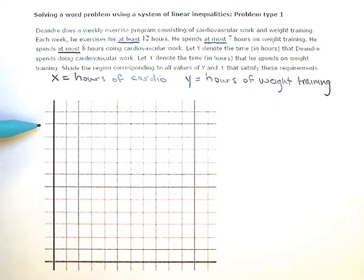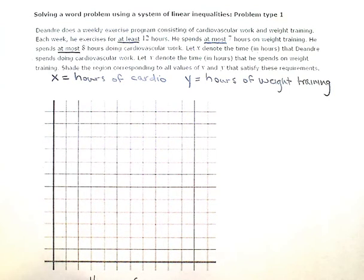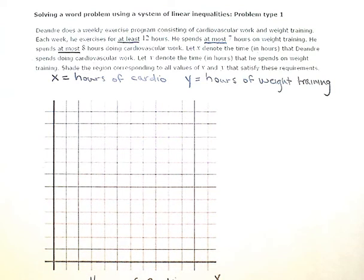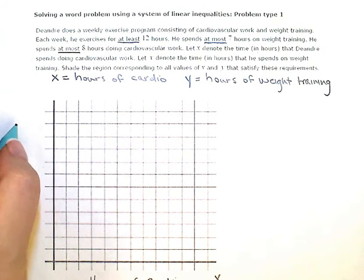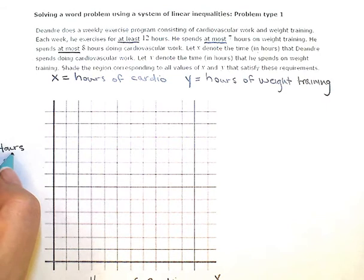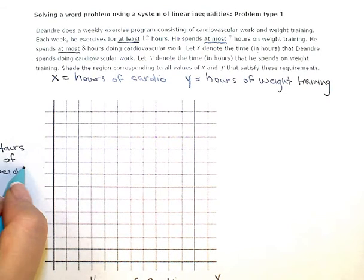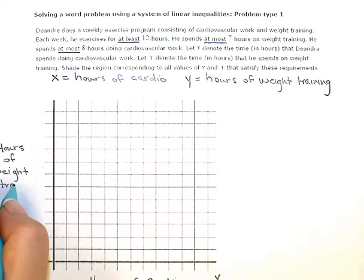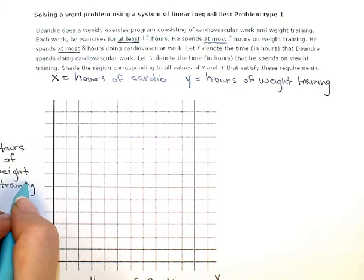And while I'm at it, since I don't have any labels on my coordinate plane or my grid here, I'm going to go ahead and put some labels. So this is hours of cardio along my X axis. Hours of weight training here. Okay, and this is my Y axis.